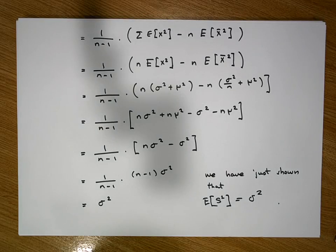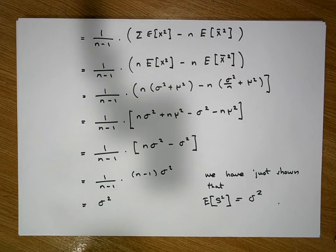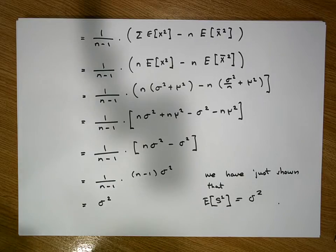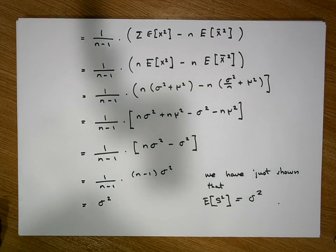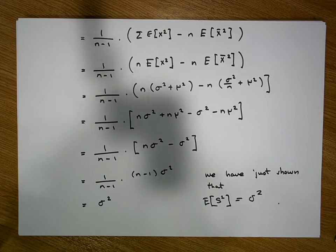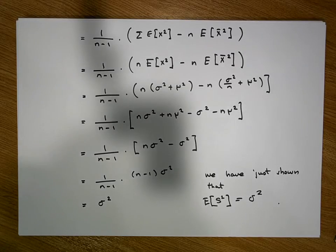I know this was quite a long video — it required a lot of algebraic manipulations and a number of preliminary identities with respect to expectations. But hopefully this has been somewhat intuitive and helped your understanding that the sample variance is an unbiased estimator of the population variance sigma squared. Thank you for your time. This was Jonathan Lambert with the Mathematics Development and Support Service at the National College of Ireland.